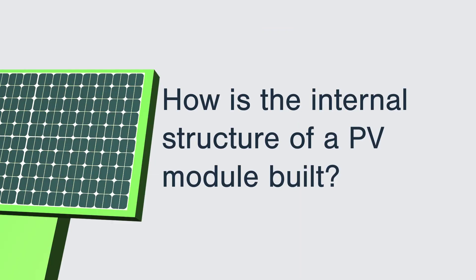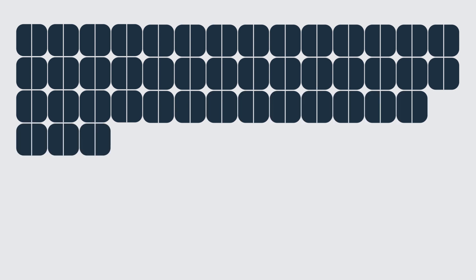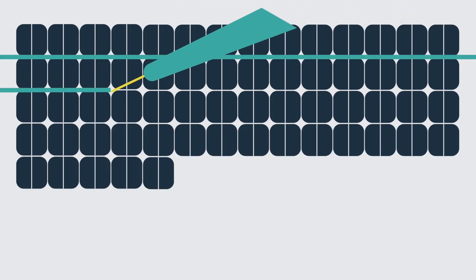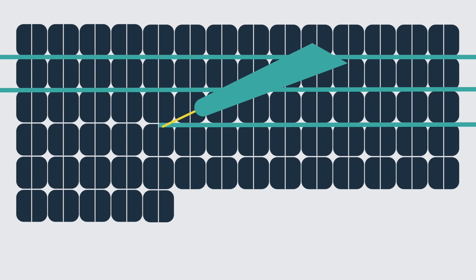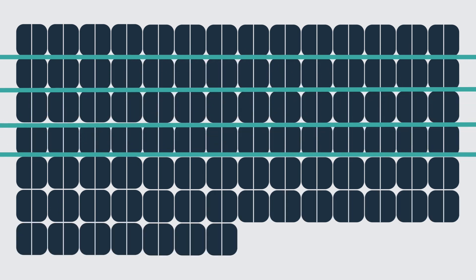Step 3. Layout. How is the internal structure of a PV module built? Firstly, the cell strings need to be arranged on the PV glass covered with EVA. Next, the deflector strips are soldered to the solder strips on both sides of the cell strings. So far, the preliminary circuit has been formed.